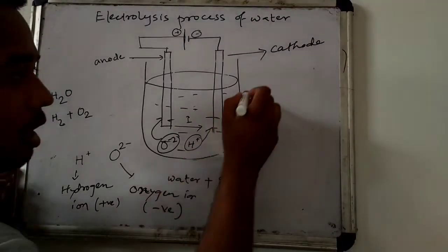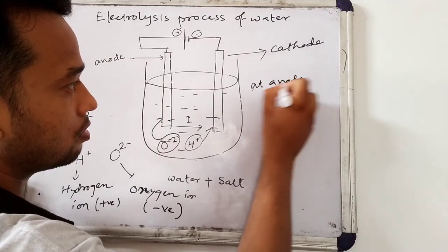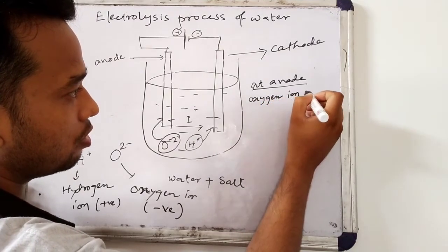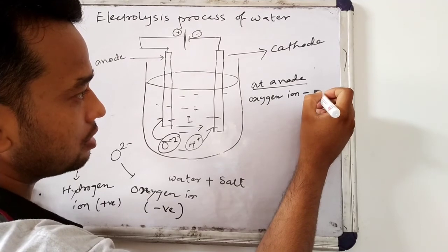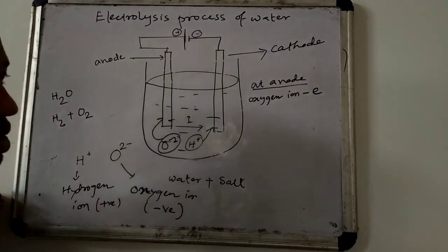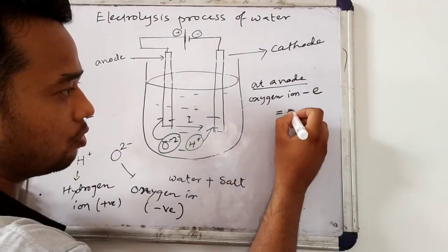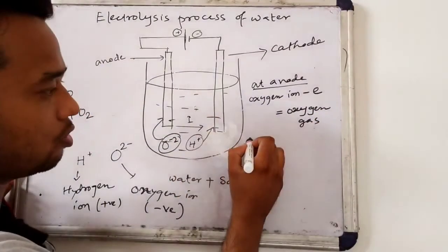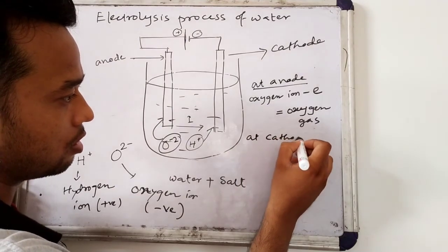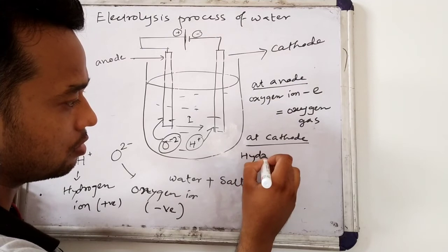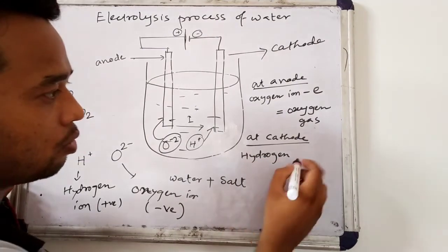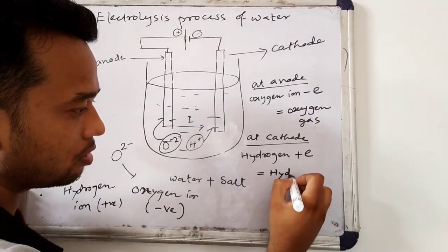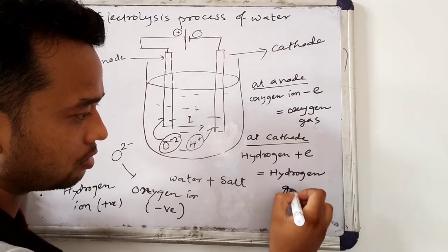At the anode, this oxygen ion will lose an electron — that means minus E — and will form oxygen gas. And at the cathode, this hydrogen ion will gain an electron — that means plus E — and will form hydrogen gas.